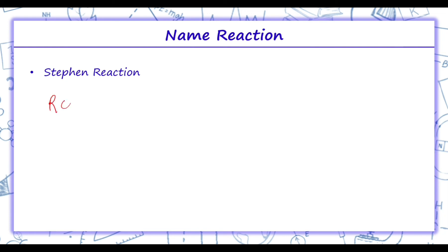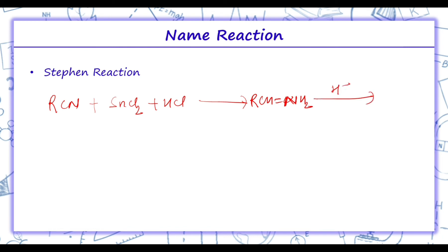Next is Stephen's reduction. In Stephen's reduction, nitriles such as RCN are reduced to corresponding amines by treatment with SnCl2 and HCl. We get an amine intermediate, which on hydrolysis forms RCHO — an aldehyde. This is Stephen's reduction, which we studied in the preparation of aldehydes from cyanides.